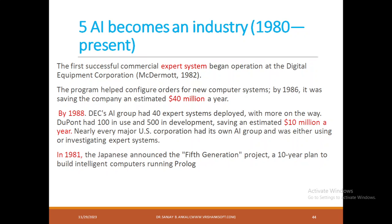Coming to 1980 to present — AI became an industry standard. The first successful commercial expert system began operation at Digital Equipment Corporation in 1982, helping configure orders for new computer systems. By 1986 it was saving an estimated $40 million a year. By 1988, DEC's AI group had 40 expert systems deployed, and DuPont had 100 in use and 500 in development, saving $10 million a year. Nearly every major US corporation had an AI group. In 1981, Japan announced a fifth-generation project — a 10-year plan to build intelligent computers running Prolog.